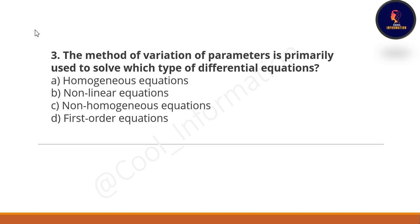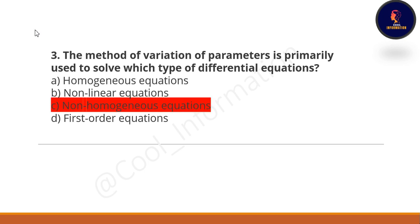Next question: the method of variation of parameters is primarily used to solve which type of differential equation — homogeneous non-linear, non-homogeneous, or first order? The correct option is option C, which is non-homogeneous equations.